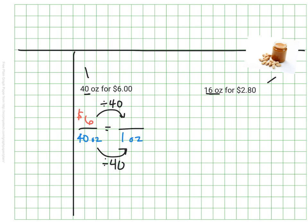I'm going to make some long division space here at the bottom to figure out what six divided by 40 would be. Hopefully, if I did this correctly, I find out that it is 15 cents for every one ounce of peanut butter. That's the rate. For every ounce of peanut butter I'm buying, I'm paying 15 cents.